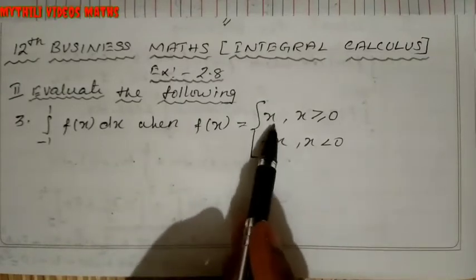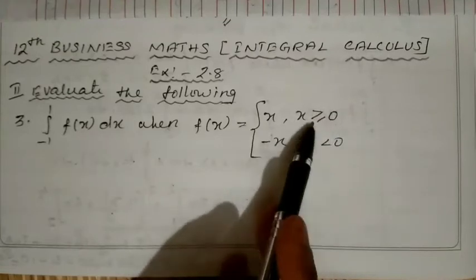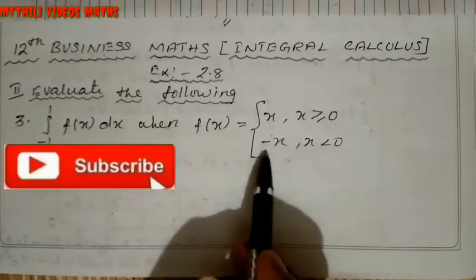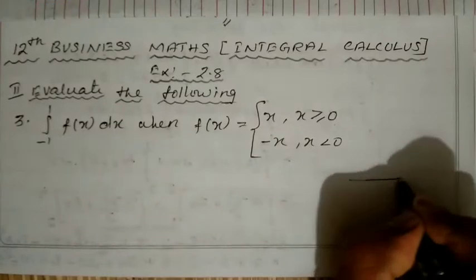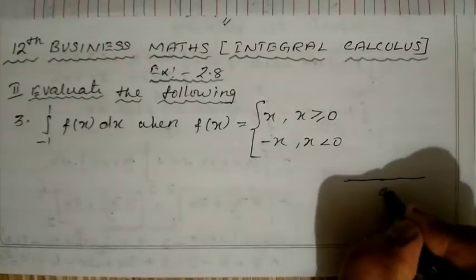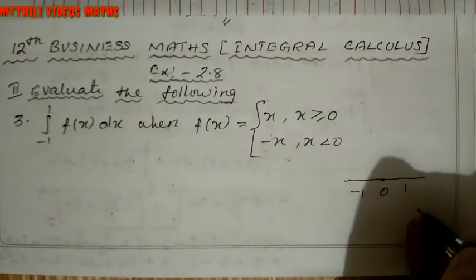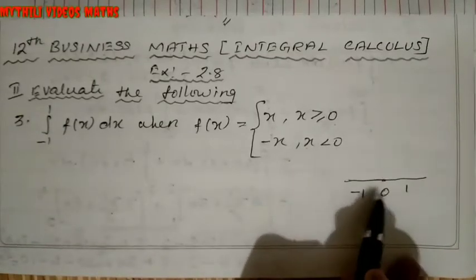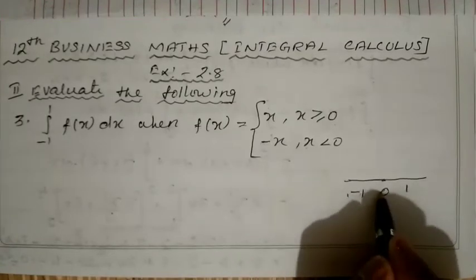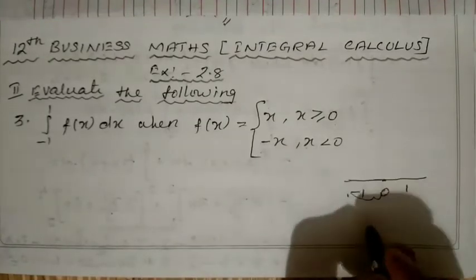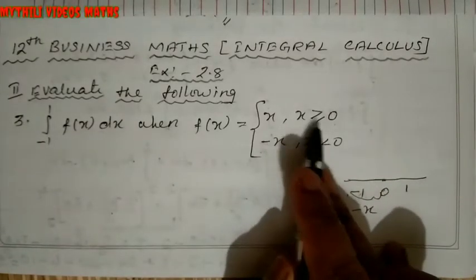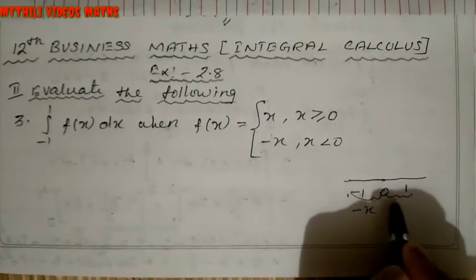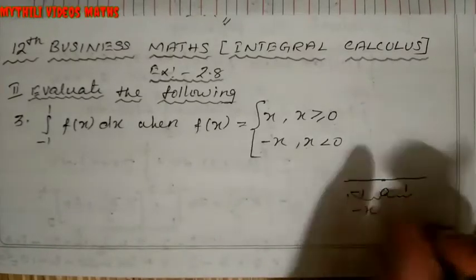The piecewise function is defined as: when x is greater than or equal to 0, we take f(x) = x. When x is less than 0, we take f(x) = -x. Let's draw the graph — the center point is 0, left side is -1, and at the middle point x = 0 we use the function -x.